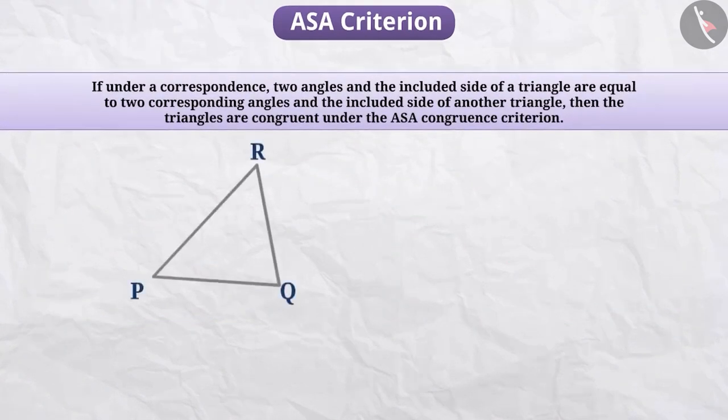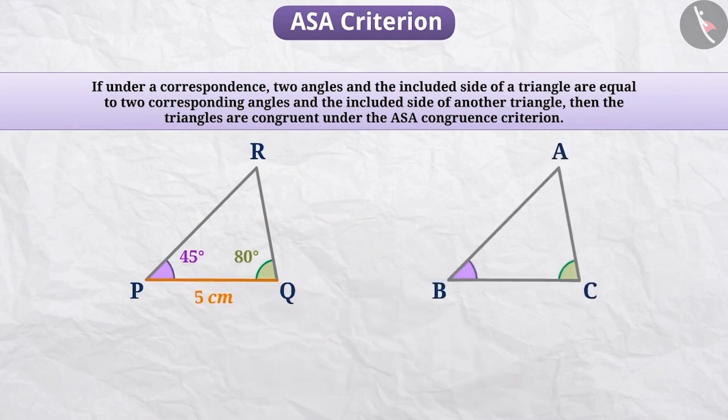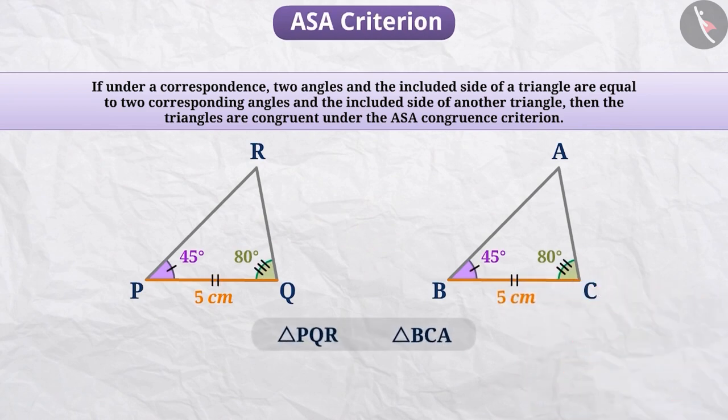Therefore, if two angles and the included side of a triangle are equal to two corresponding angles and the included side of another triangle, then the triangles are congruent under the ASA congruence criteria.